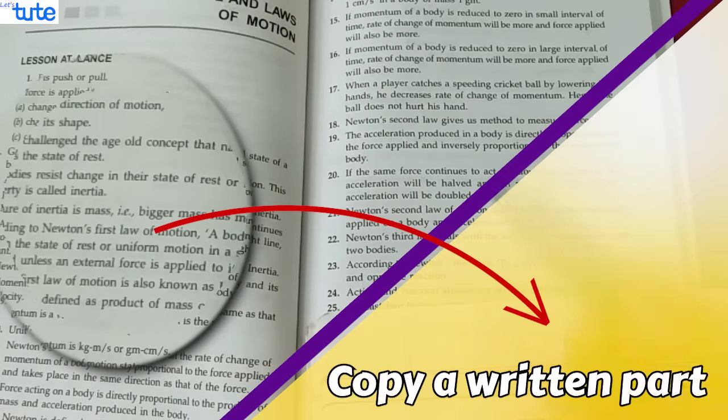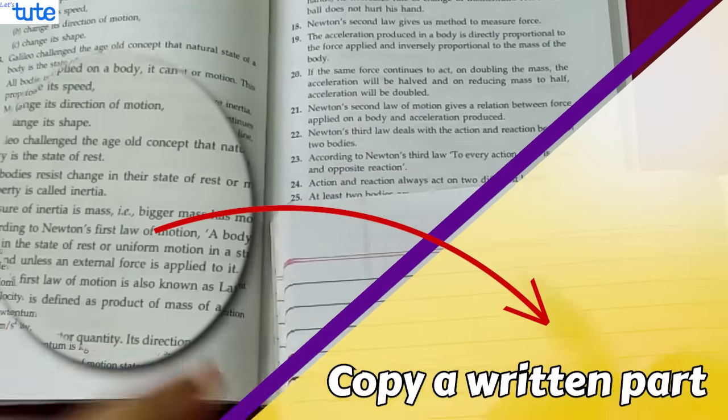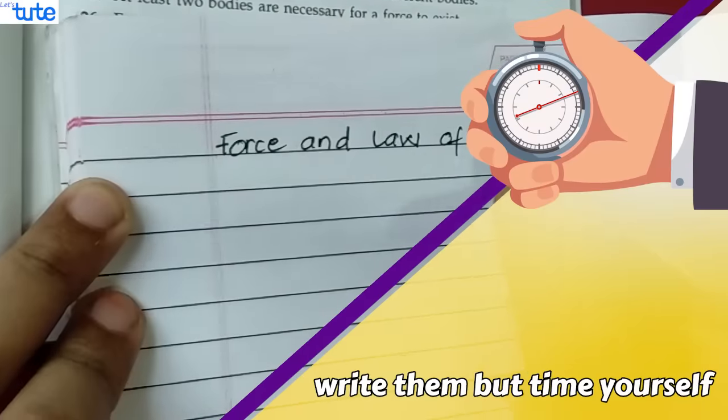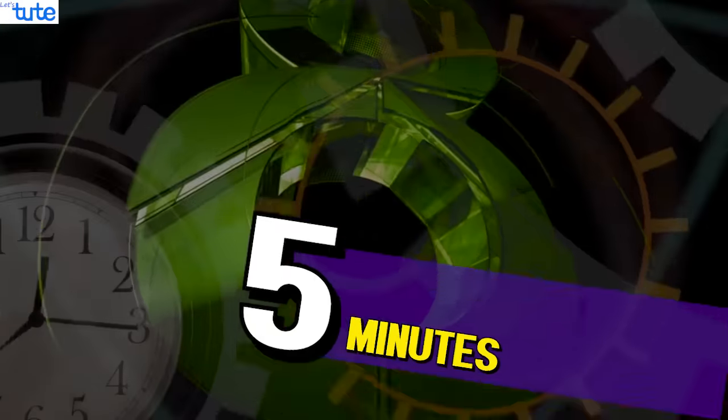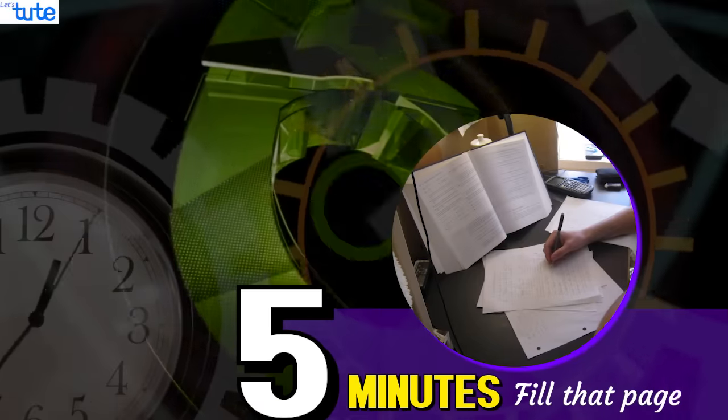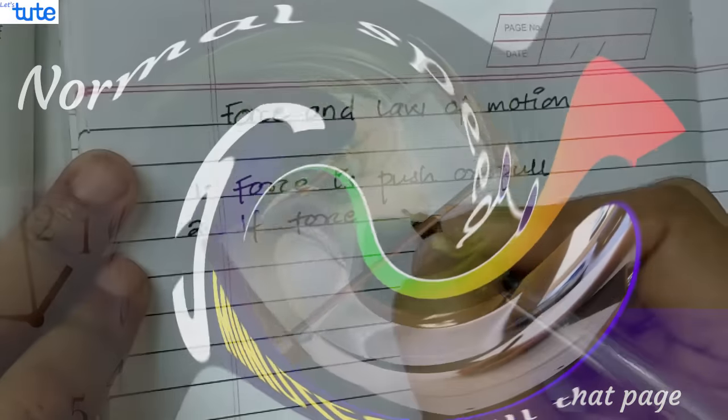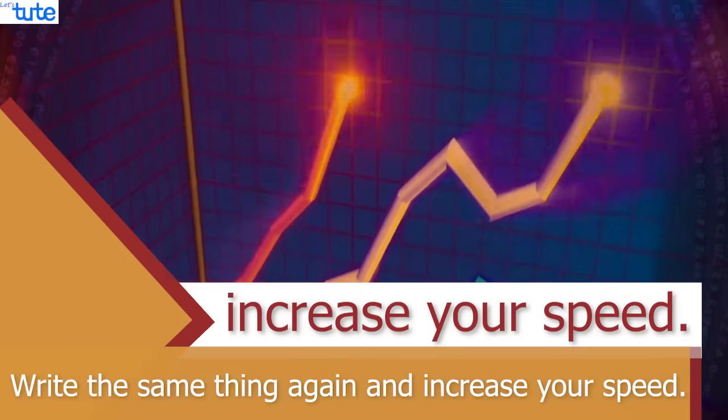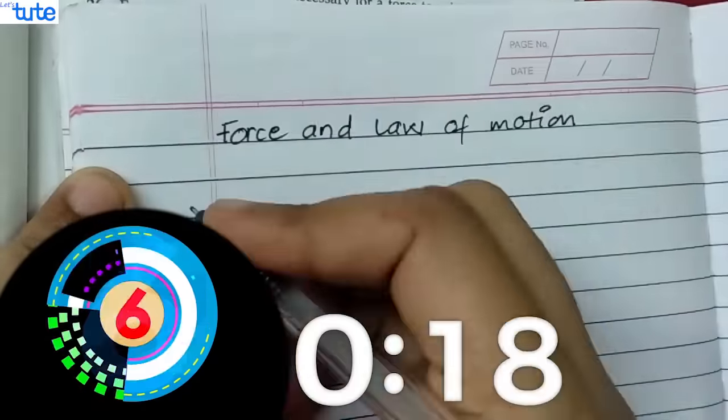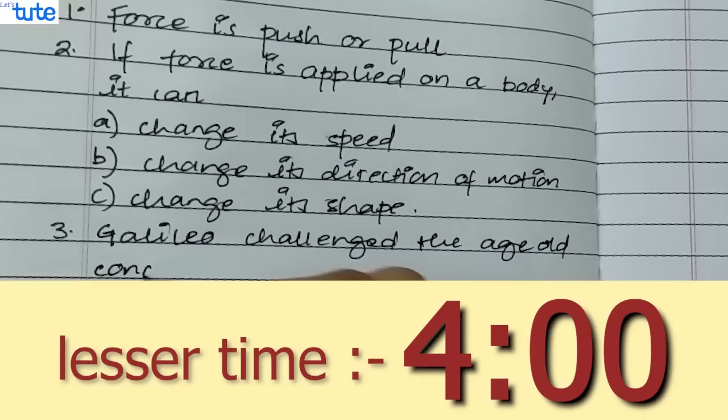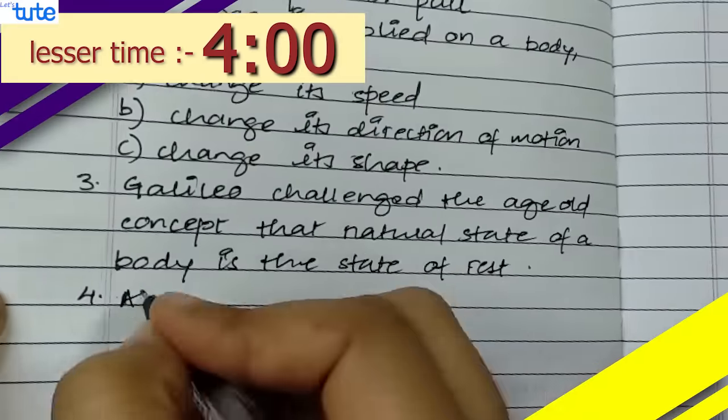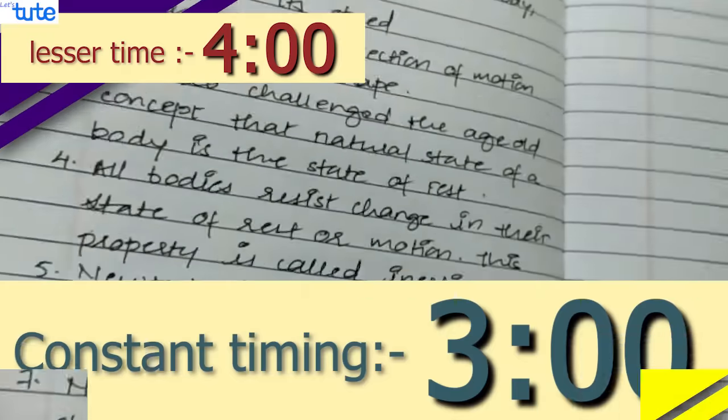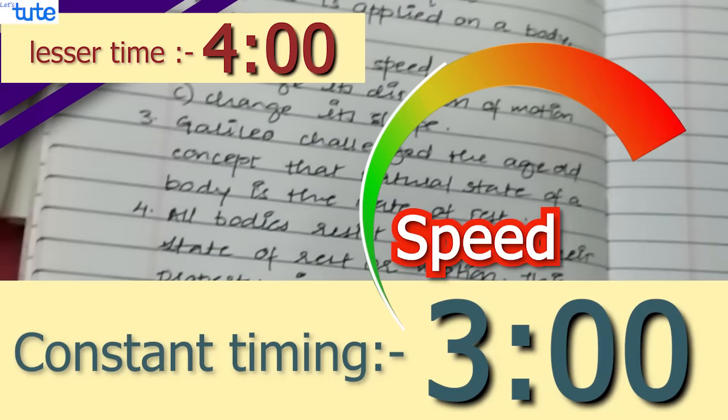Try to copy a written part from any of your reference material and write them but time yourself. Suppose that you take 5 minutes to fill that page at your normal speed. Next time, write the same thing again and increase your speed. Check whether you are able to finish that in a lesser time. Each time, try reducing the time until you get a constant timing and that will give you your speed.